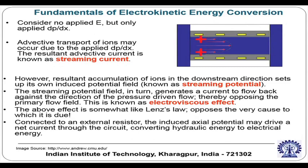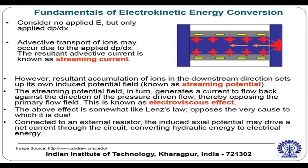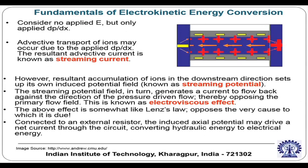At the interface between the immobile and the mobile layer of ions — called the shear plane — the potential is known as the zeta potential. The characteristic length scale over which the potential reduces to zeta divided by e is the characteristic length scale of the electrical double layer, known as the Debye length. With this recapitulation, let us discuss the fundamentals of electrokinetic energy conversion.